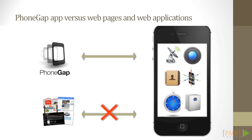Secondly, PhoneGap apps can access device capabilities through JavaScript interfaces, like the accelerometer, camera, compass, etc.